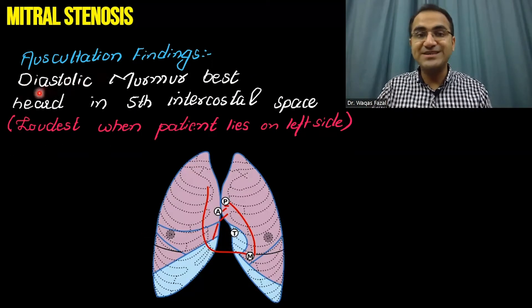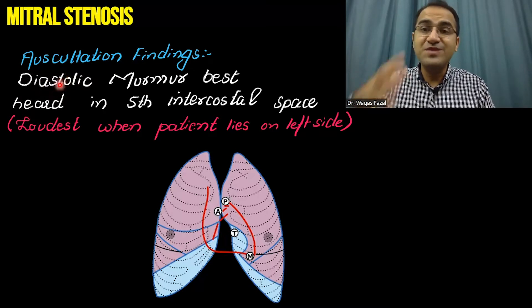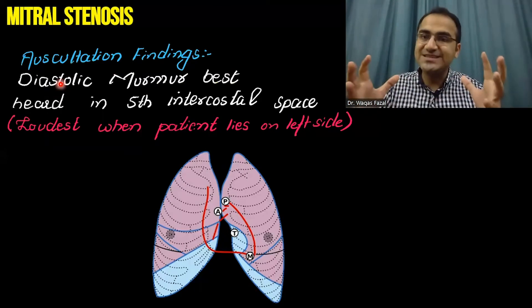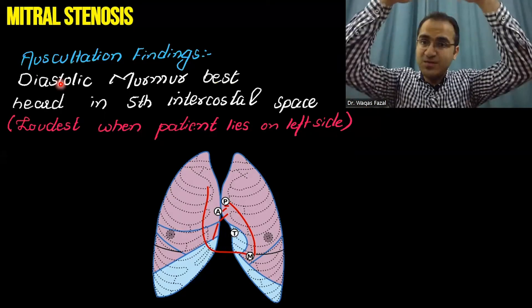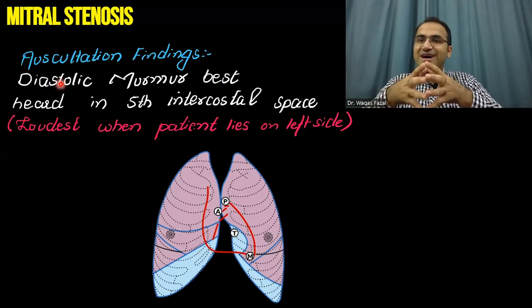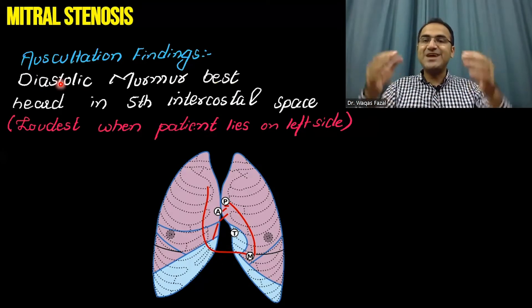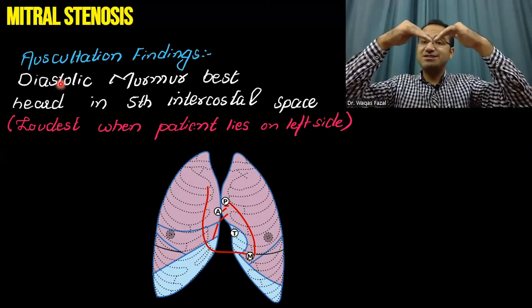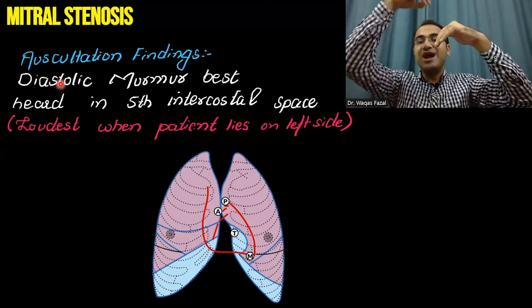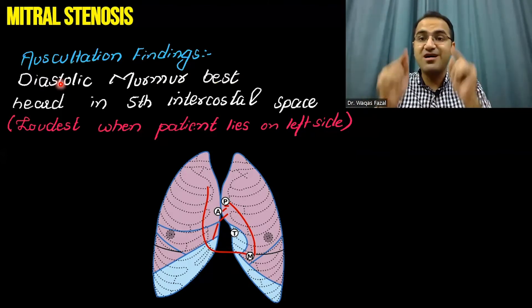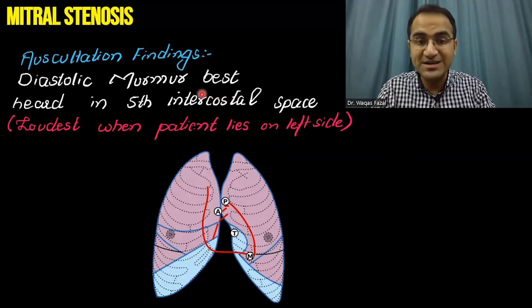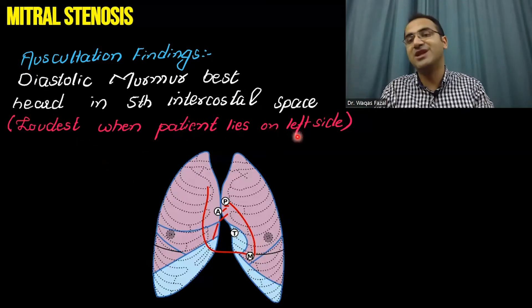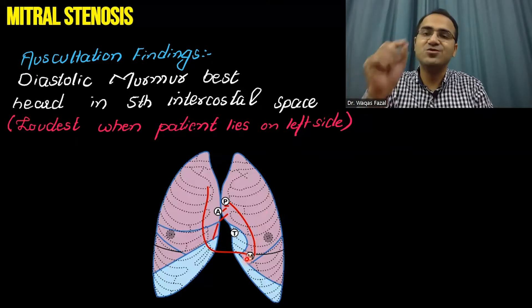Coming to the auscultation findings in mitral stenosis: there will be a diastolic murmur. Why? Because whenever the left ventricle relaxes, the atria contract and push blood towards the left ventricle. At that point there is difficulty due to mitral stenosis because the path is stenosed, so you will hear this murmur whenever the heart is in diastole. It is best heard in the fifth intercostal space at the apex, and it is loudest when the patient lies on the left side.